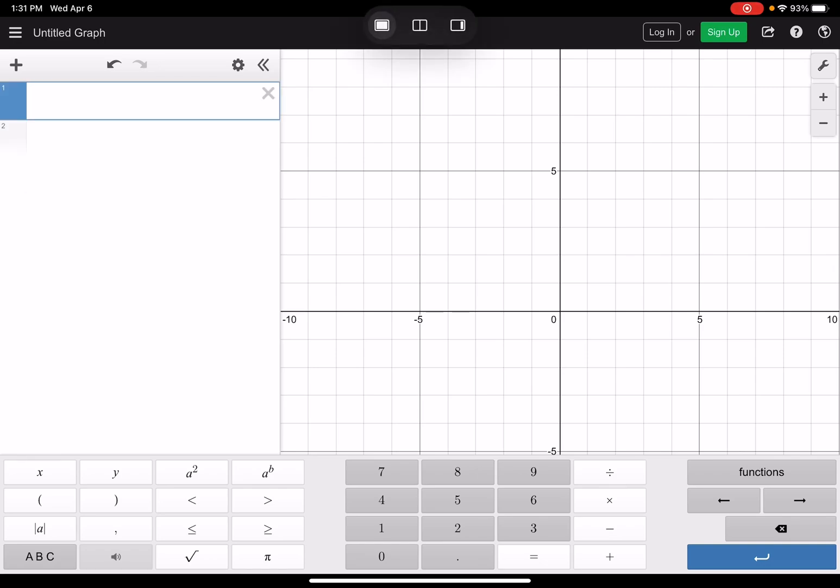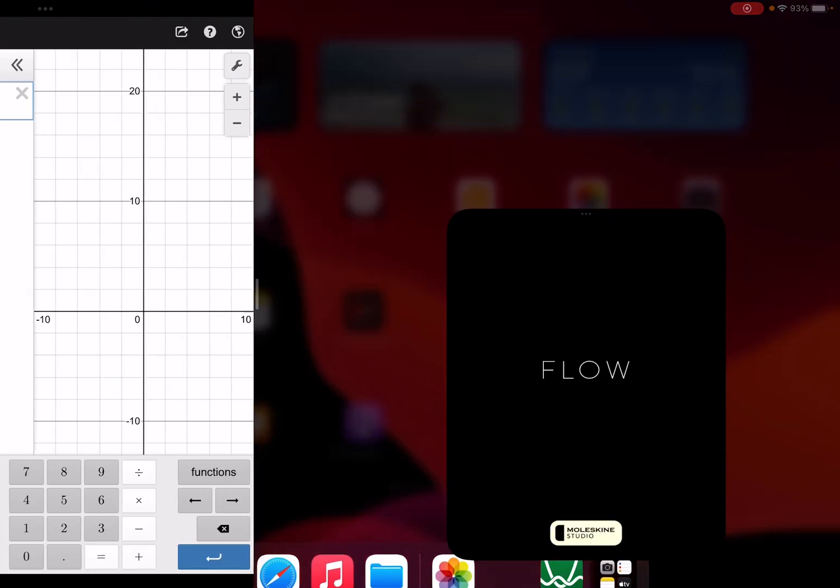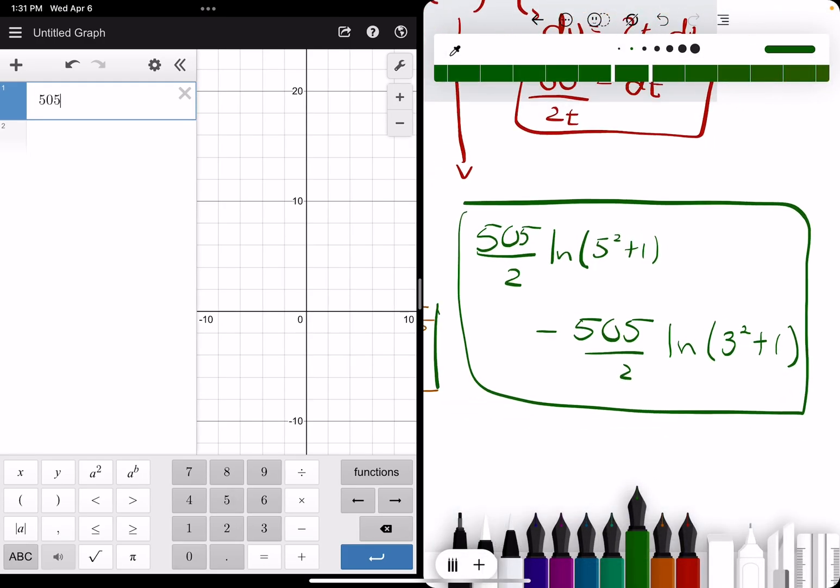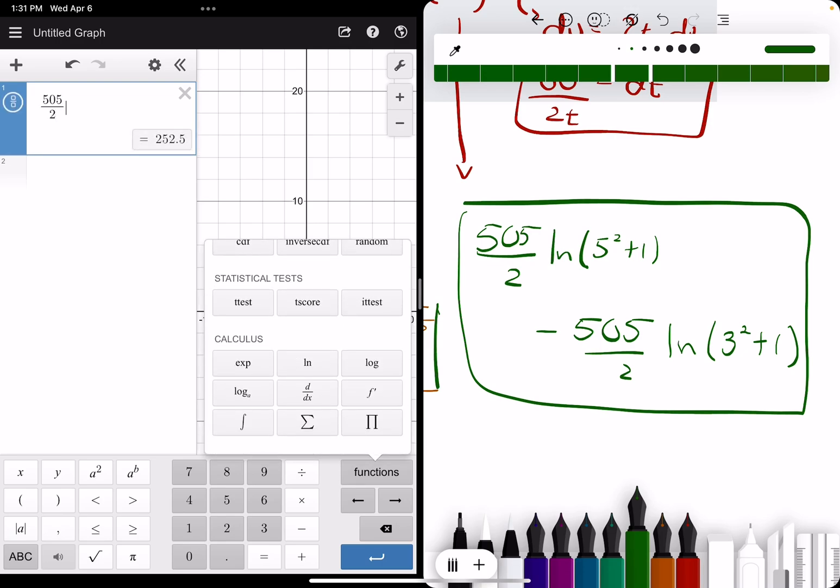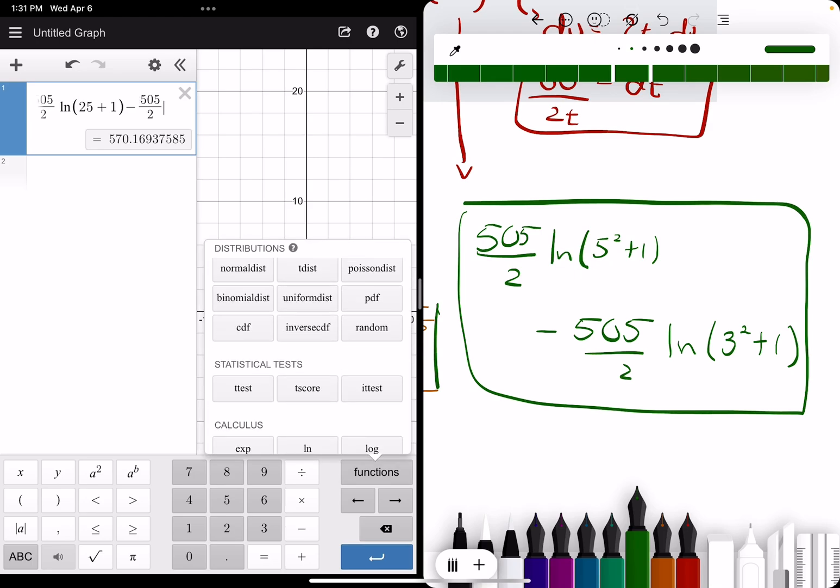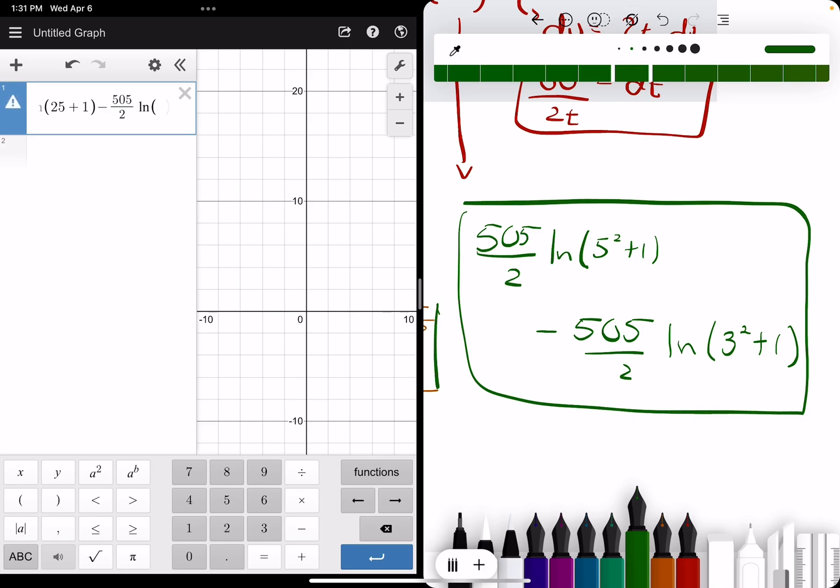Let's do split screen. All right. So we have 505 over 2 natural log, 5 squared plus 1. So I'll just do 25 plus 1 or 26 minus 505 over 2 times the natural log of 3 squared plus 1. So 9 plus 1. So I'll just call it 10. And we get 241.3.